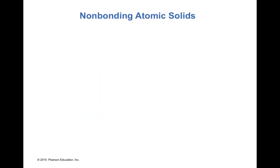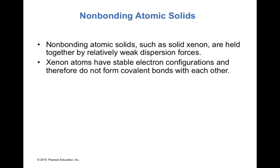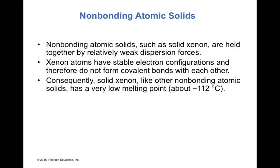Non-bonding atomic solids, such as solid xenon, are held together by relatively weak dispersion forces. Xenon atoms have stable electron configurations and do not form covalent bonds with each other. As expected from weak dispersion forces, solid xenon has a very low melting point of about −112°C.